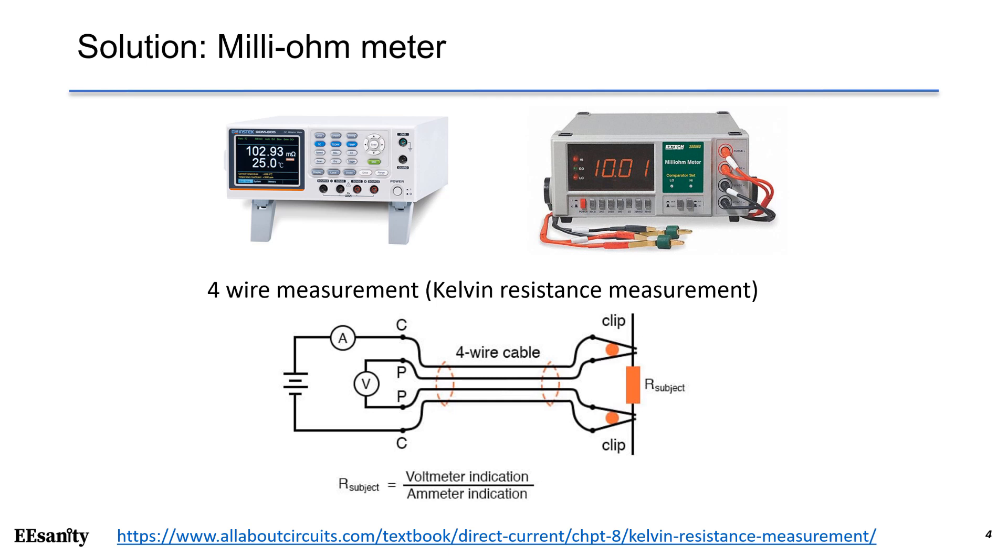The most convenient solution is to use a milli-ohm meter. It has four wire Kelvin connection. One pair of wire provides a current to flow through the resistor under test. Another pair to measure the voltage drop across the resistor. As a result, the measured resistance equals to the voltage measurement divided by the current measurement.